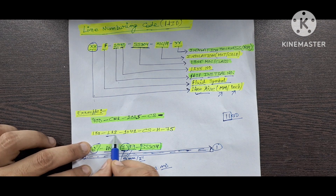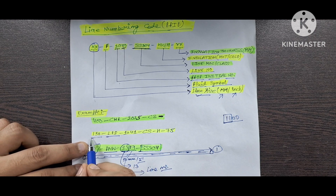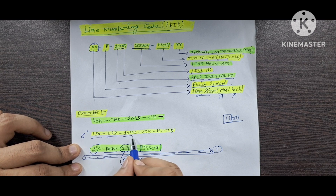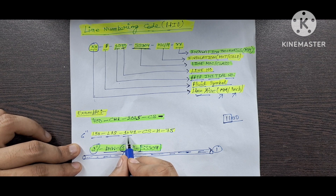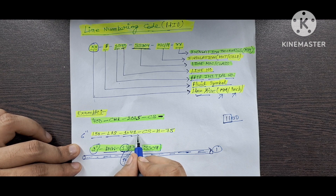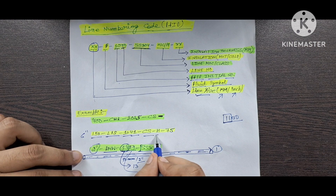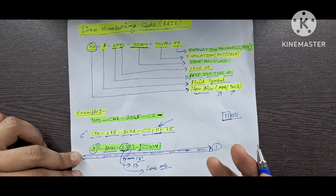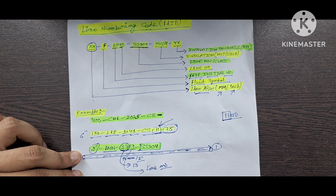For example, in the case of steam — here you will see a low pressure steam line where the line size is 150 mm, which is 6 inch. The 10th number is the P&ID serial number. 41 is your line number. CS is the MOC of the pipeline. H75: the H tells you it is hot insulation, and 75 tells you the thickness of that insulation.